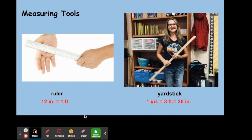In a previous video, we learned that a ruler is 12 inches or one foot long. You can usually hold a ruler in your hand. A yardstick is much longer - three rulers long or three feet, which equals 36 inches. Most of the time we use a ruler to measure smaller objects and a yardstick to measure larger objects.